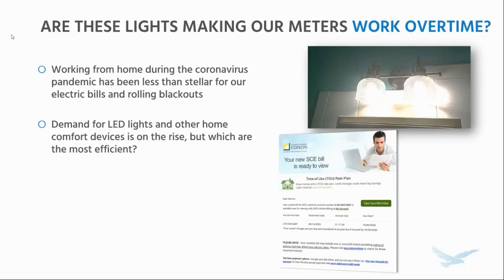Since the coronavirus pandemic started, I've been working from home about 95% of the time. Living in Southern California, that has not been helpful for my electric bill. We've had severe heat waves that triggered wildfires, and SoCal Edison has been sending warnings about electricity usage — and our electricity rates are not low. In the interest of trying to lower my electric bill and not make blackouts worse, I did a couple of examples to make things in my home more efficient and use less electricity.